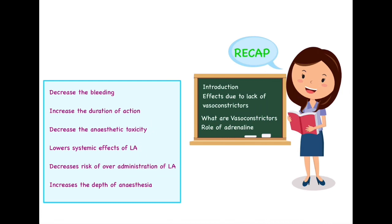We studied that vasoconstrictors are solutions which cause constriction of blood vessels, thereby reducing perfusion at that particular site. We also studied the six key reasons for adding epinephrine to local anesthesia. First, it lessens the chances of bleeding, which is especially important during major surgical procedures where significant bleeding may be anticipated — by decreasing perfusion at the required site, bleeding is minimized. Second, it increases the duration of action by limiting the drug to the particular site where the local anesthetic effect is needed. Third, it decreases anesthetic toxicity by preventing redistribution of the drug.